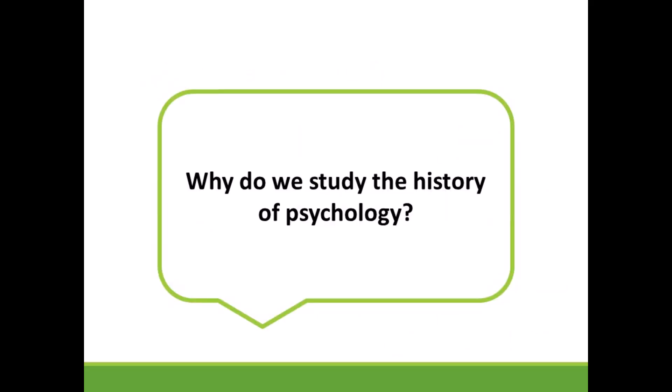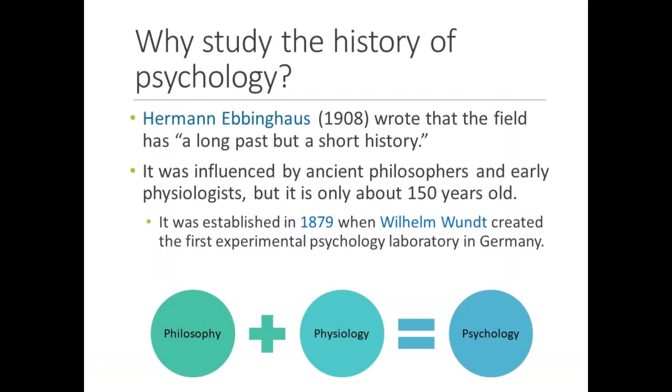In the next part of this lecture, we'll answer the question: why do we study the history of psychology? The field's development is a fascinating story. In 1908, Herman Ebbinghaus, a pioneer in the study of memory, wrote that the field has a long past but short history. That's because psychology evolved from the writings of ancient Greek philosophers and early physiologists in the 17th, 18th, and 19th centuries, but the field is only about 150 years old. Experts generally agree that the field was officially established in 1879 when Wilhelm Wundt created the first experimental psychology laboratory in Germany.